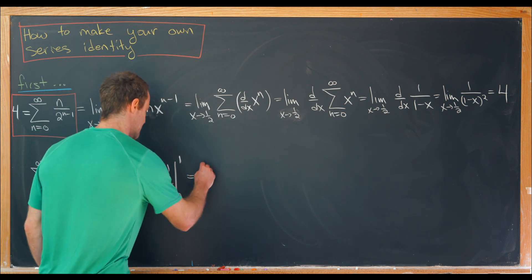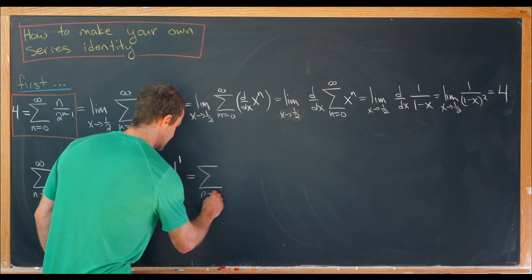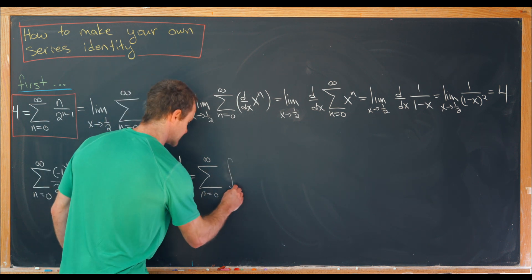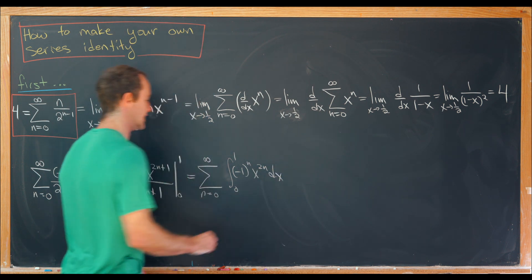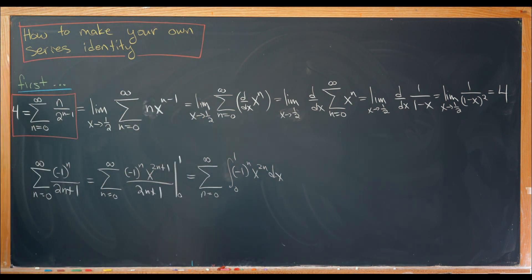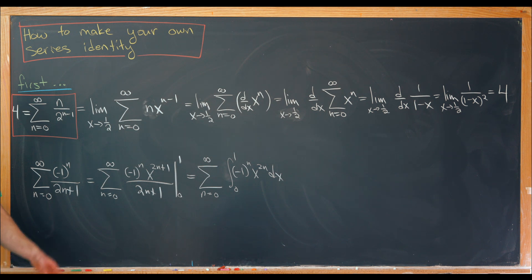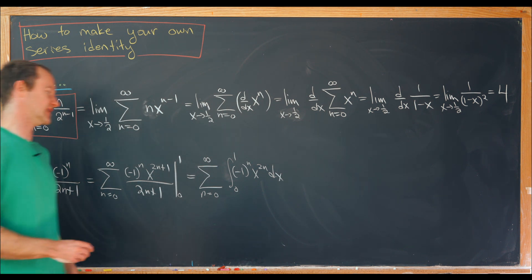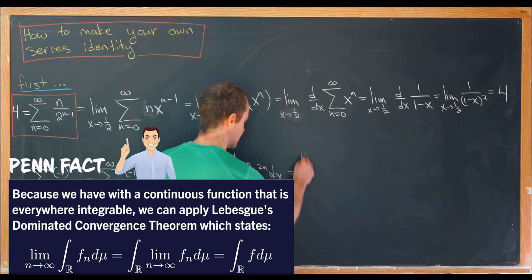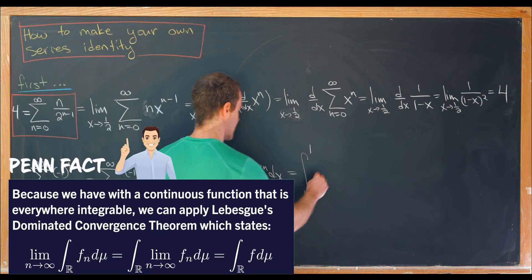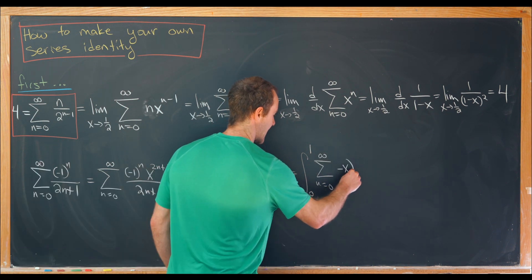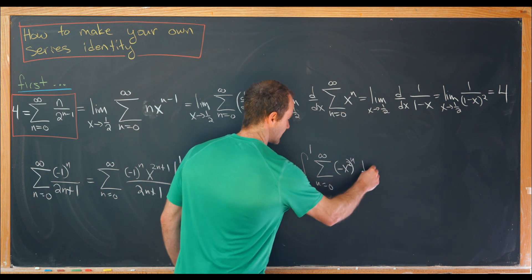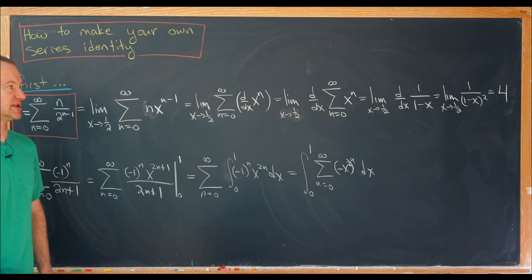We can rewrite this as the sum as n goes from 0 to infinity of the integral from 0 to 1 of minus 1 to the n times x to the 2n dx, using the fundamental theorem of calculus to go from an antiderivative evaluation to an integral. Now let's exchange the order of summation and integration, leaving us with the integral from 0 to 1 of the sum as n goes from 0 to infinity of (minus x squared) to the n dx. We've got a geometric series again.